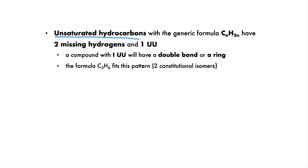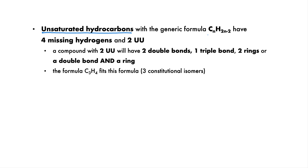Unsaturated hydrocarbons with the formula CnH2n are missing two hydrogens and so have one unit of unsaturation. A compound with one unit of unsaturation will have either a double bond or a ring. The formula C3H6 fits this pattern. There are two constitutional isomers for this formula — one isomer has a double bond and one has a ring. Unsaturated hydrocarbons with the formula CnH2n-2 have four missing hydrogens and so have two units of unsaturation. A compound with two units of unsaturation will have either two double bonds, one triple bond, two rings, or one double bond and one ring.